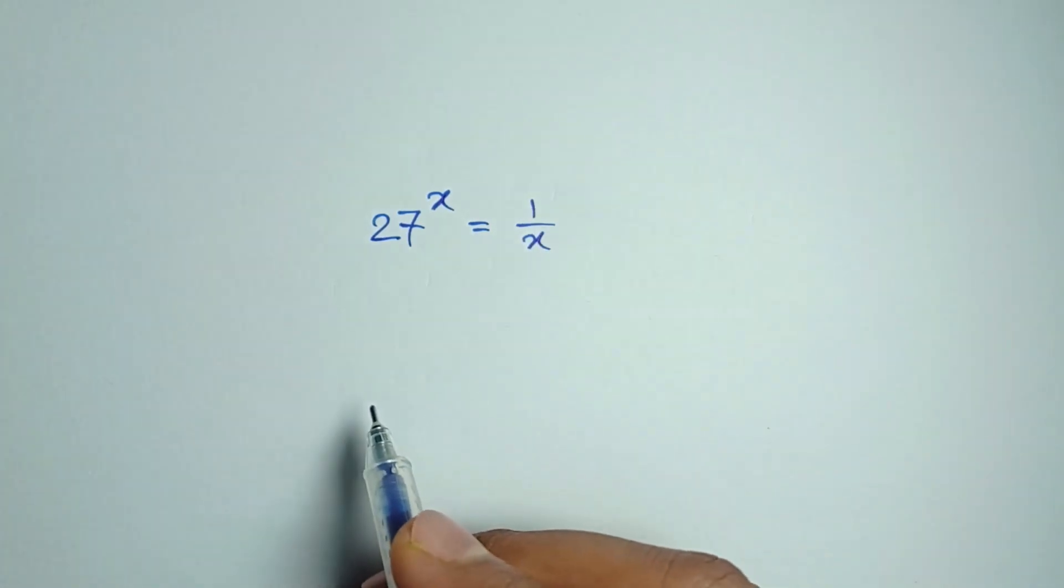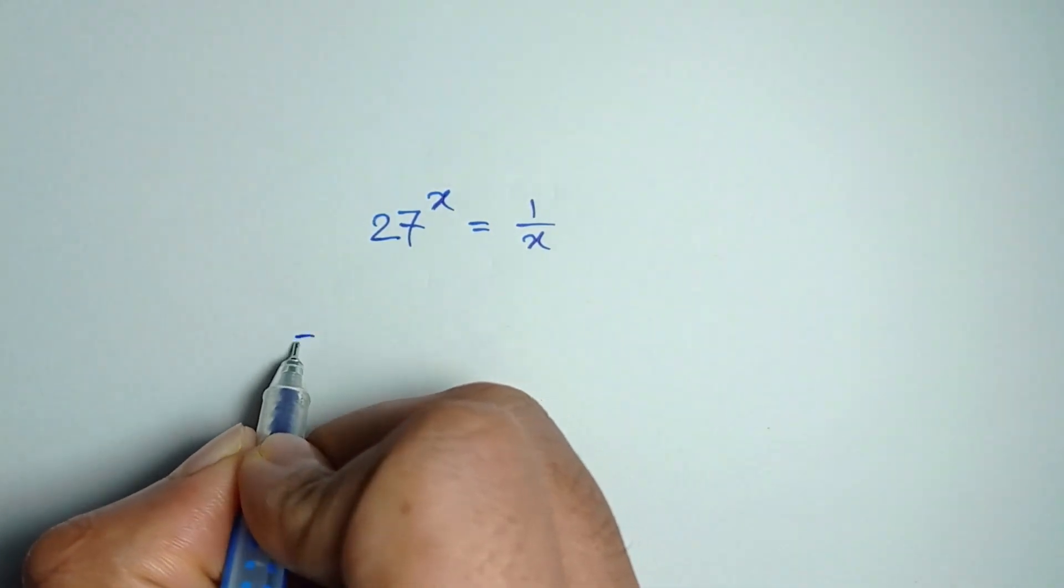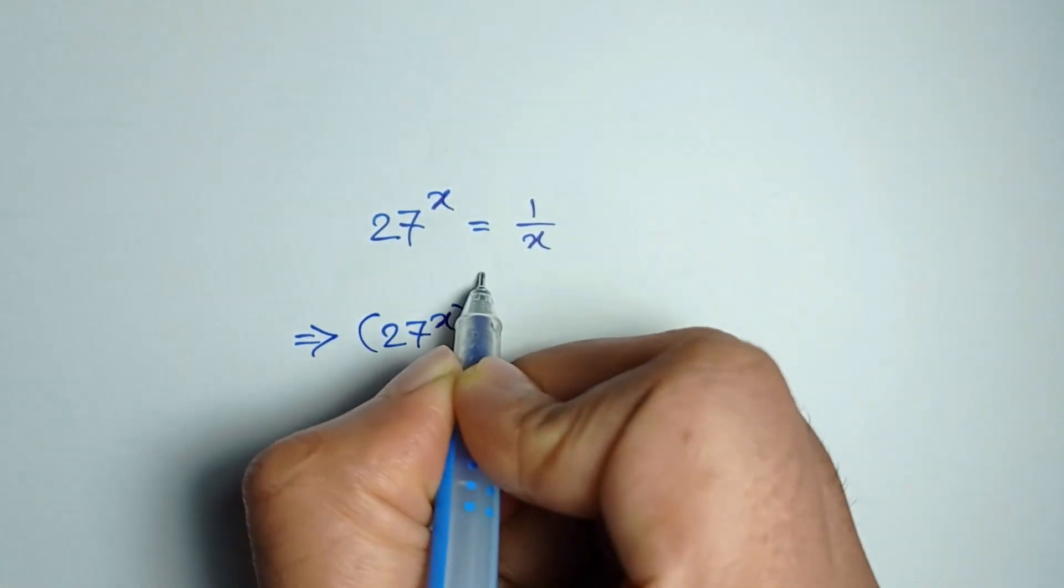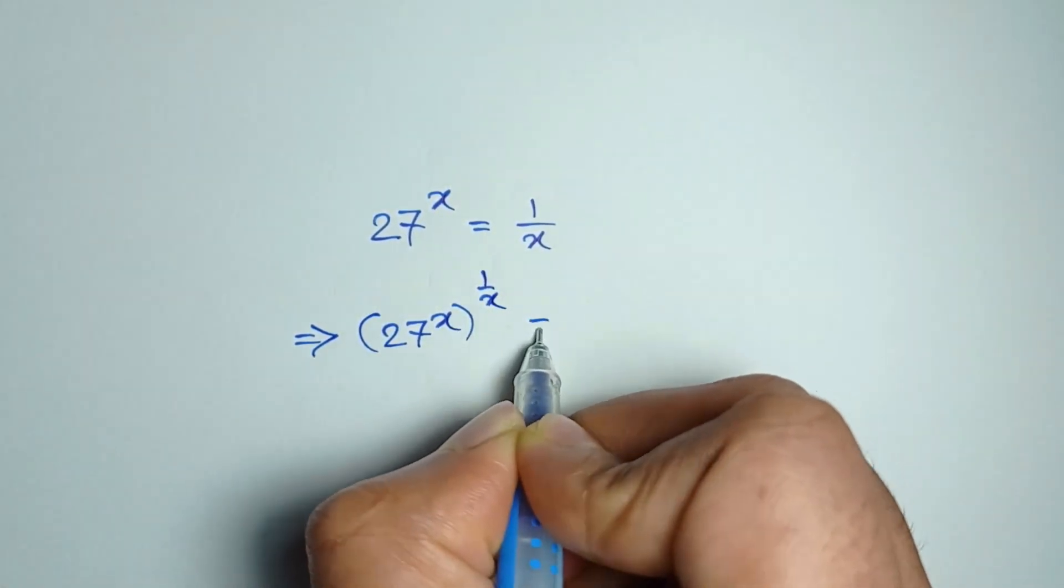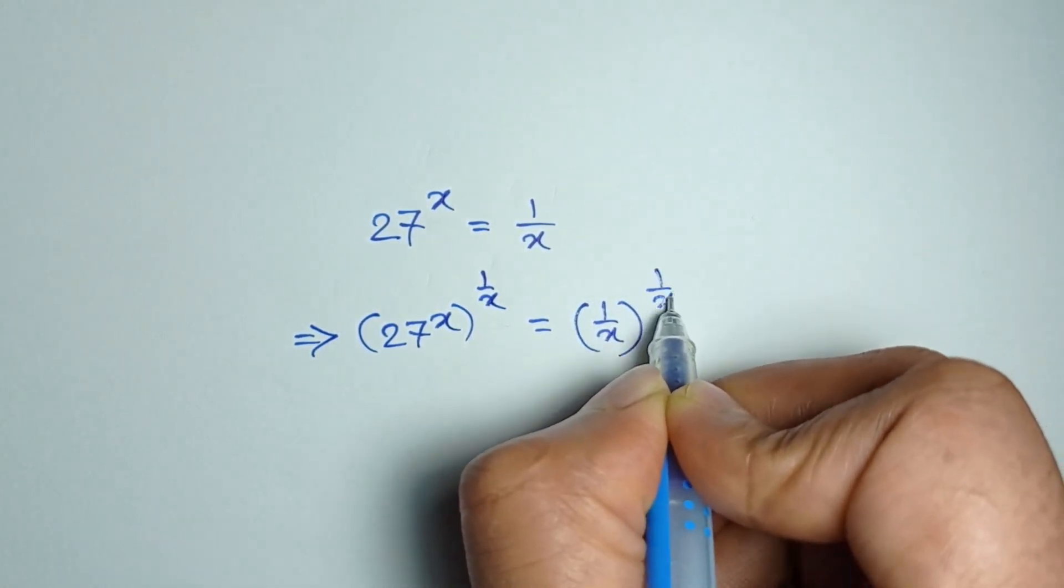Now if we take power 1 by x both side, we get 27 to the power x whole to the power 1 by x is equal to 1 by x whole to the power 1 by x.